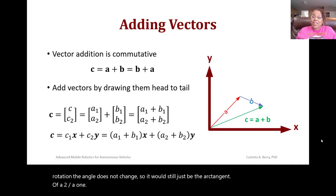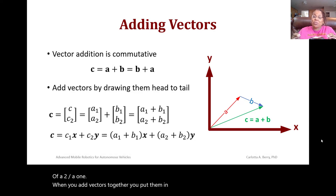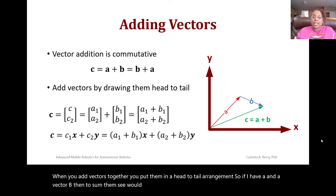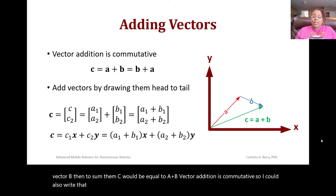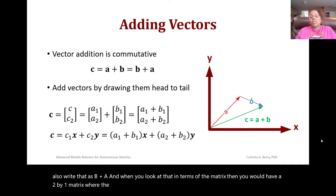When you add vectors together, you put them in a head-to-tail arrangement. So if I have a vector a and a vector b, then to sum them, c would be equal to a plus b. Vector addition is commutative, so I could also write that as b plus a. And when you look at that in terms of the matrix, then you would have a 2 by 1 matrix where the first element is a1 plus b1, and the second element is a2 plus b2, or I could write it as c equals the quantity a1 plus b1x plus a2 plus b2y.